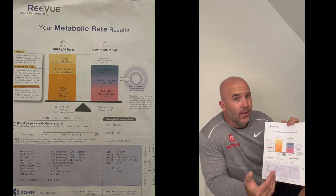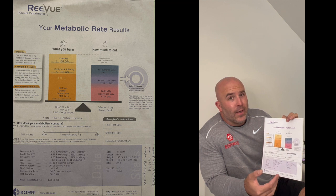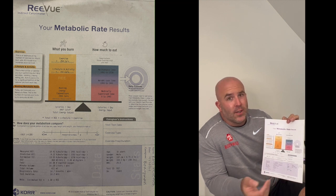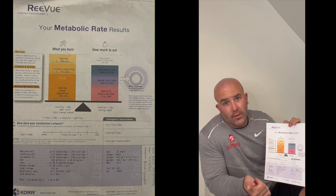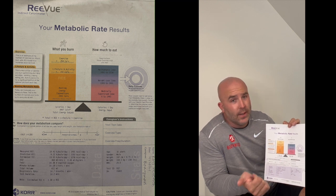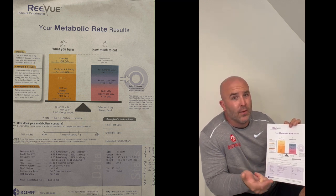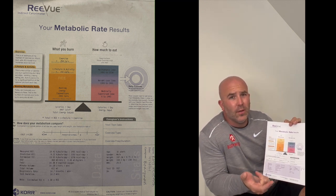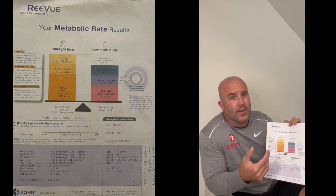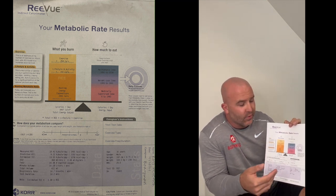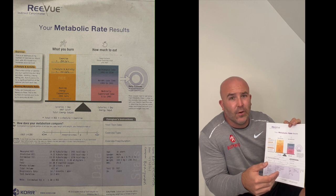The medically supervised zone is sadly where we find most people actually eat. If you're eating in that range, you're in such a large deficit that you're probably going to lose lean mass along with a little bit of fat — and the loss of lean mass is a real negative. So we want to stay out of that range.